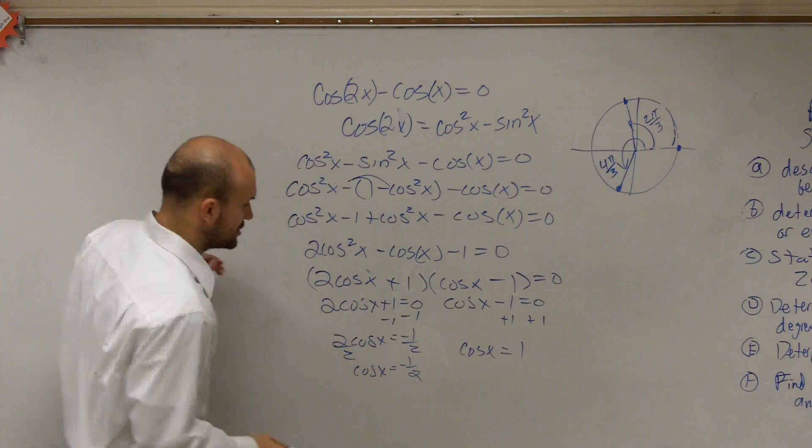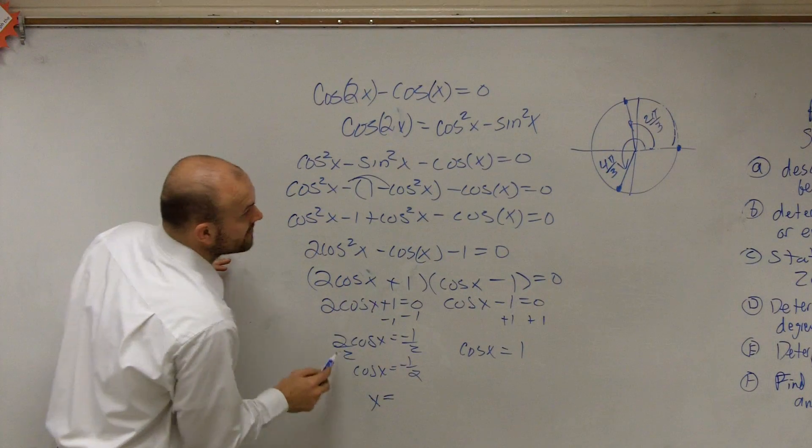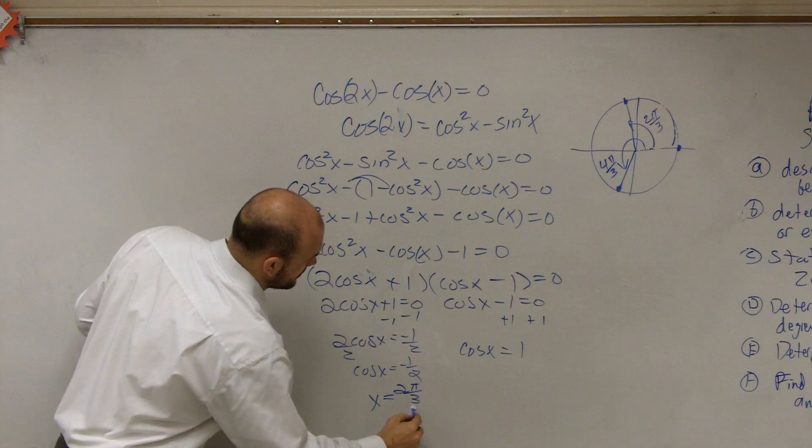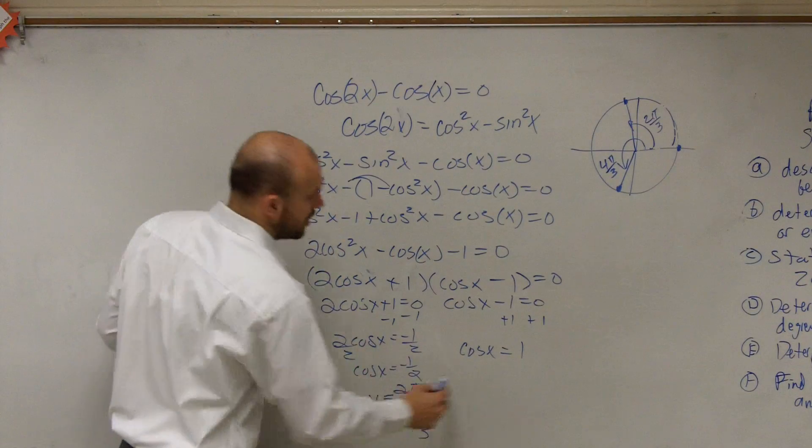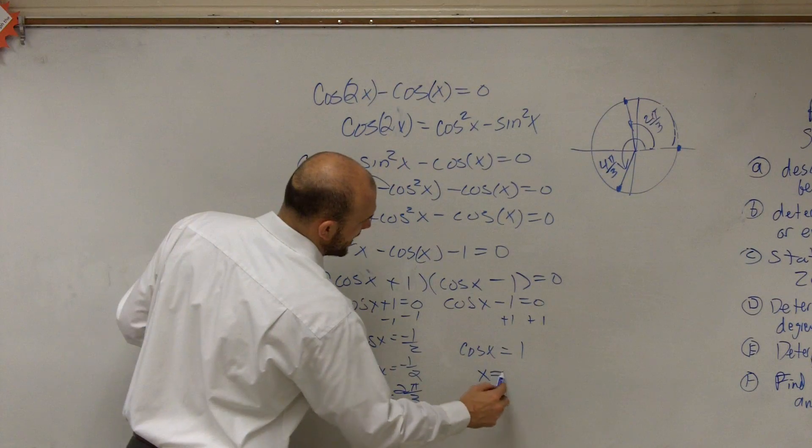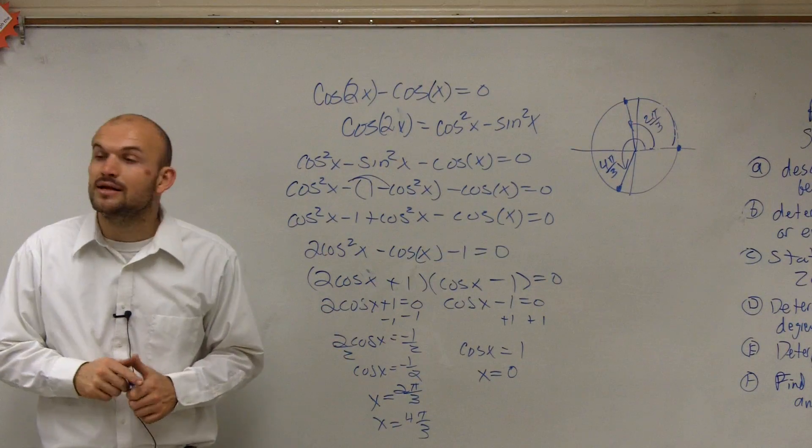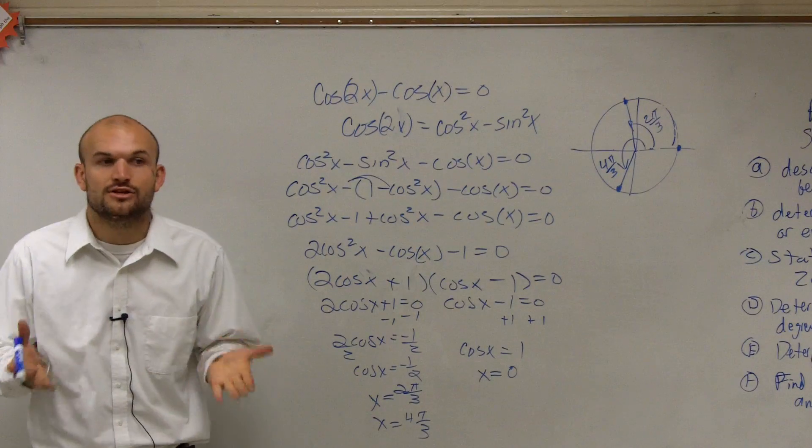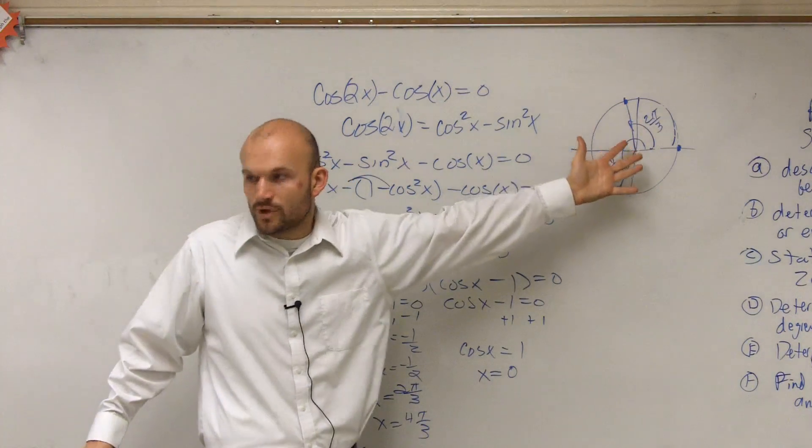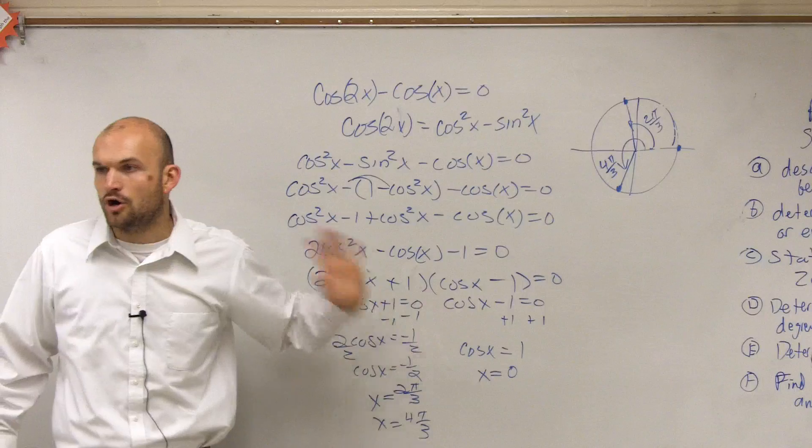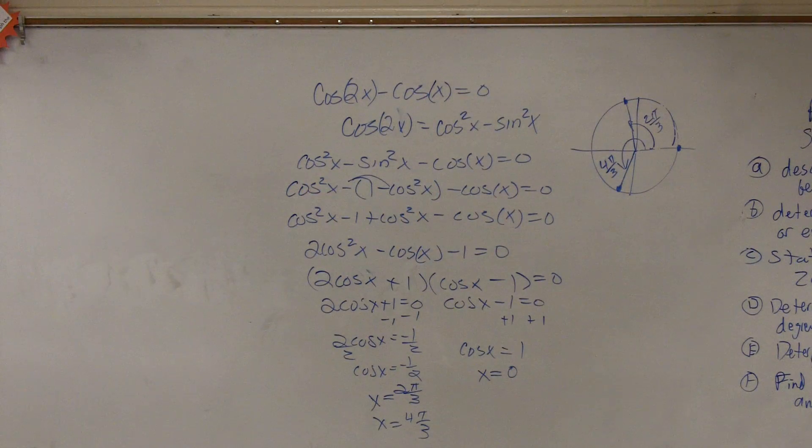So therefore, you can now say on the unit circle, x is going to be equal to, for at negative 1 half, it's equal to 2 pi over 3, and x is equal to 4 pi over 3, and x is equal to 1 when cosine of x, when your angle x is equal to 0. We're not adding the 2 pi n, stuff like that, because the question says, find all the solutions between 0 and 2 pi. So I'm only going to include the answer that I can find on one revolution in the unit circle, rather than adding all the possible solutions.